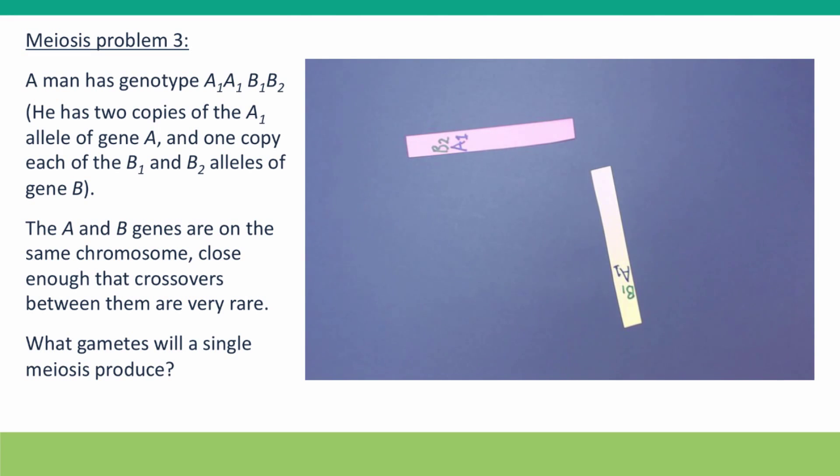This problem, while it might be more complicated, might also be more simple. The A and B genes are on the same chromosome, so we only need to consider one chromosome, but there are two genes on it, so maybe that makes it more complicated. We're told we don't need to worry about crossovers—they're very rare.